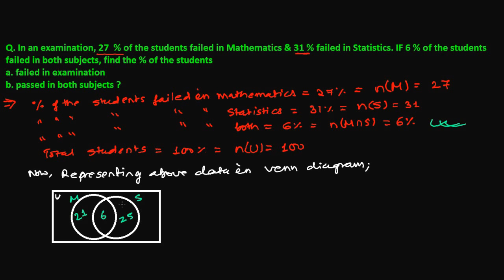Total percentage that failed: those students who finally failed in the examination. This 21% are also failed, this 6% are also failed, and this 25% are also failed — all are the failed percentage. Outside the circles, in the outer region, are those students who passed. The circles represent students who failed, and outside means students who passed.